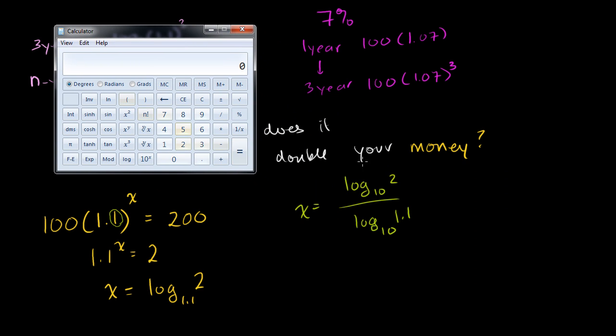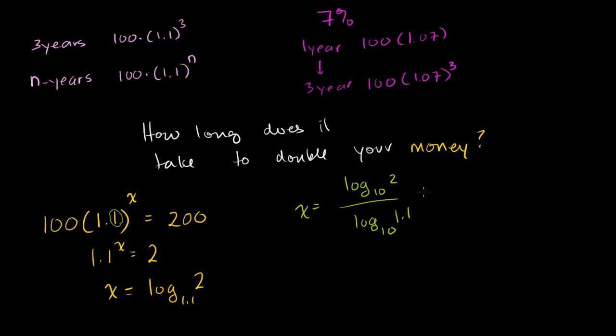Let's try it out right here. So we're going to have 2, and we're going to take the logarithm of that, which is 0.3, divided by 1.1 and the logarithm of that is equal to 7.27 years, so roughly 7.3 years.